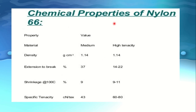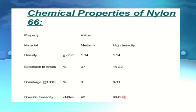Chemical properties of nylon 6,6: density is 1.14 g/cm³ for both medium and high-tenacity grades. Extension to break percentage: 37 for medium, 40 to 22 for high-tenacity. Shrinkage at 100°C: 9 percent and 9 to 11 percent respectively. Specific gravity: 43 and 60 to 80.